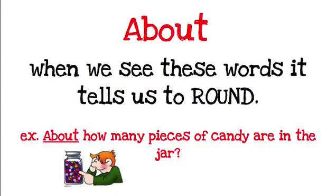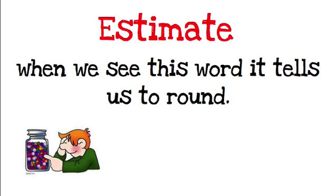Some vocabulary words we will see when rounding. The word 'about' — when we see this word, it tells us to round. For example, 'about how many pieces of candy are in the jar?' We don't know exactly how many are in there, but we can estimate and round. Another word would be 'estimate.' When we see this word, it also tells us to round.